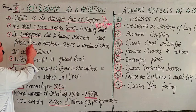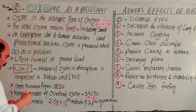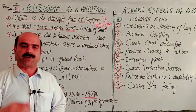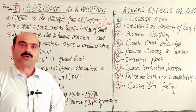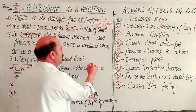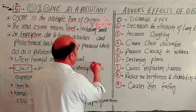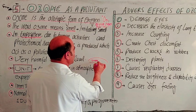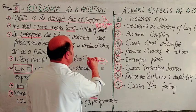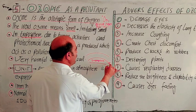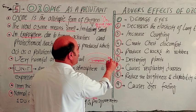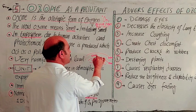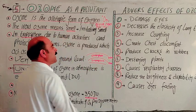In the troposphere, which is the first layer of the atmosphere from Earth's surface or sea level up to 11 kilometers, this sphere is called the troposphere. The next layer extends up to 50 kilometers and is called the stratosphere. Because of its ozone content, it is also called the ozonosphere.